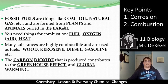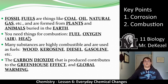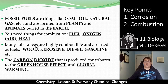Fossil fuels like coal, oil, and natural gas are formed from plants and animals buried in the earth. For combustion you need three things: the fuel — these fossil fuels — oxygen, and a heat source. Many substances are highly combustible and used as fuels: wood, kerosene, diesel, gasoline. These are all hydrocarbons. Wood is made of hydrogen and carbon, as well as kerosene, diesel, and gasoline.